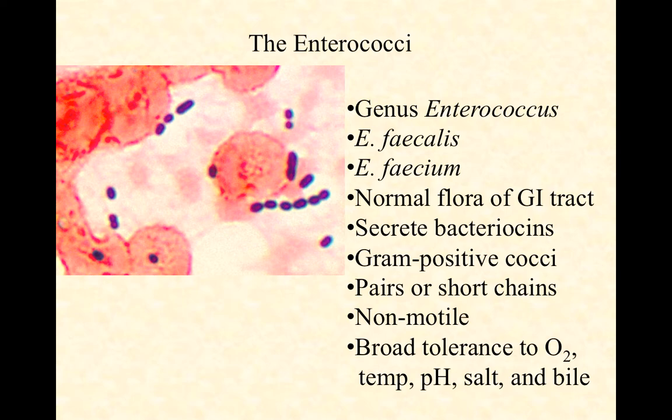We find them in pairs or short chains, and like most cocci, they're non-motile. One thing that makes them really adaptable to certain niches within the gut and in the natural environment as well is that they have an unusually broad tolerance to environmental conditions. They can handle oxygen's presence, extreme anaerobic conditions, a broader range of temperatures, a broader range of pH, and a broader range of salt.